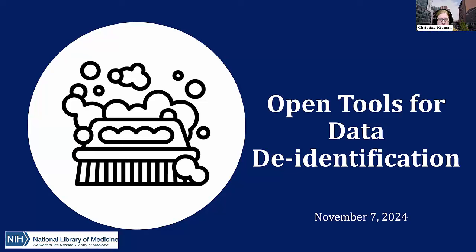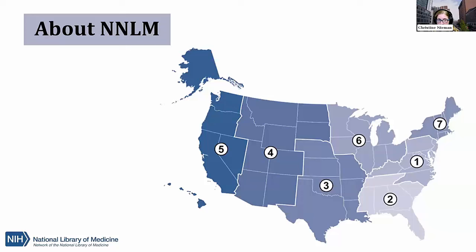Today we are delving into de-identification tools, exploring their importance and how librarians can effectively use and advocate for these technologies. We are from the Network of the National Library of Medicine, also known as NNLM. The NNLM is the education and outreach arm of the National Library of Medicine, which is one of the 27 National Institutes of Health. The NNLM is the world's largest biomedical library, which maintains and makes available a vast print collection and produces electronic information resources such as MedlinePlus and PubMed.